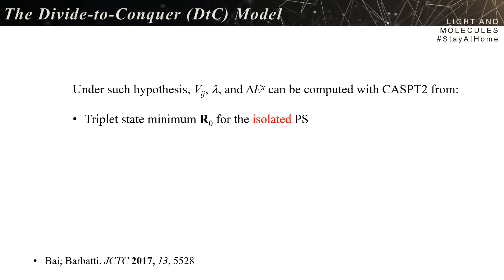It's what you call the divide-to-conquer method. You do a triplet state calculation for the minimum of the isolated photosensitizer—it's not even the complex, it's the isolated photosensitizer—and then you compute the intersystem crossing point for the isolated photosensitizer.